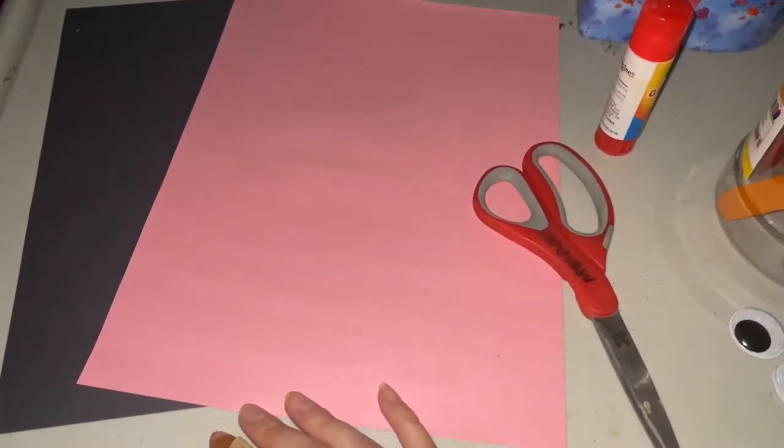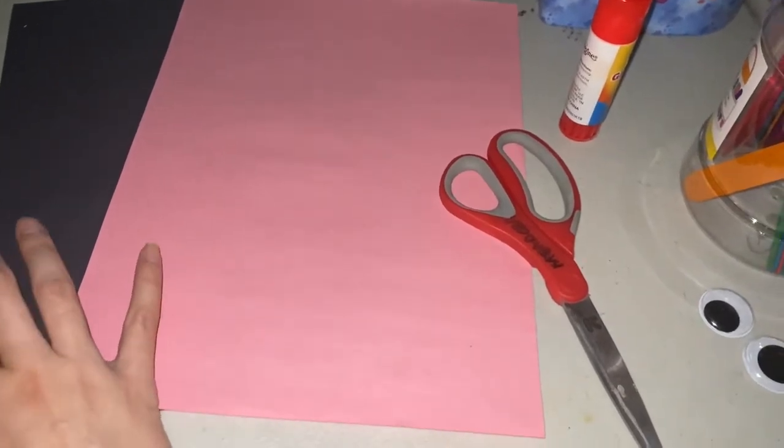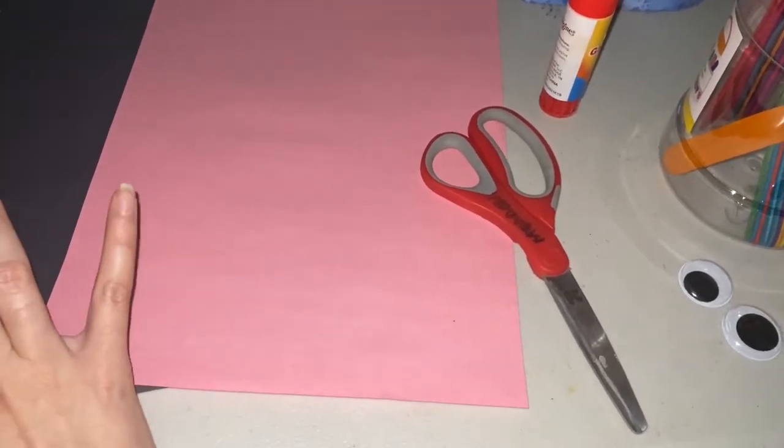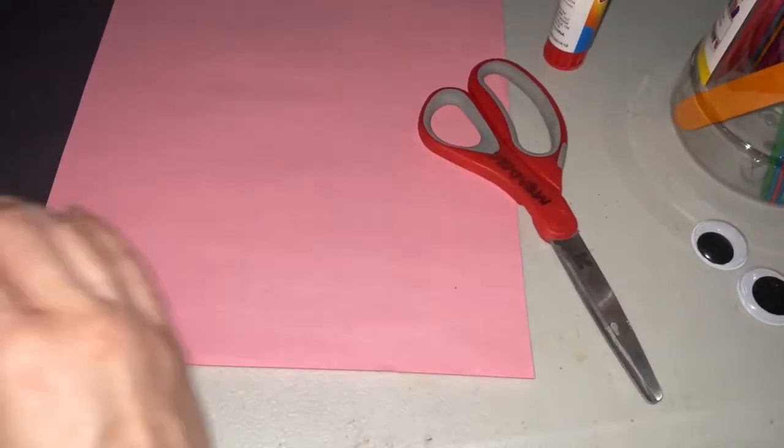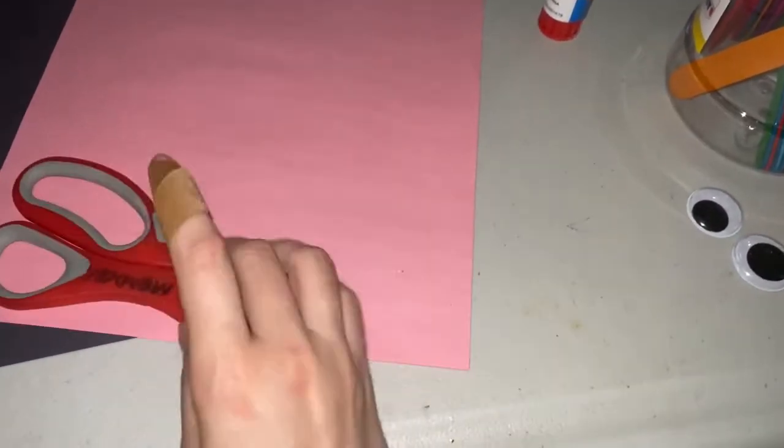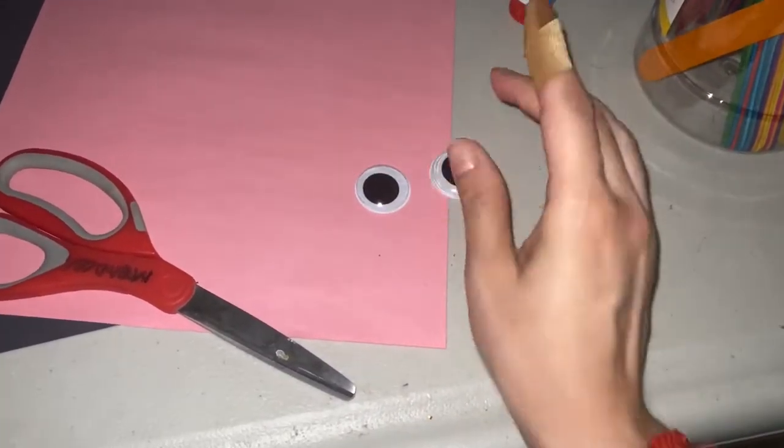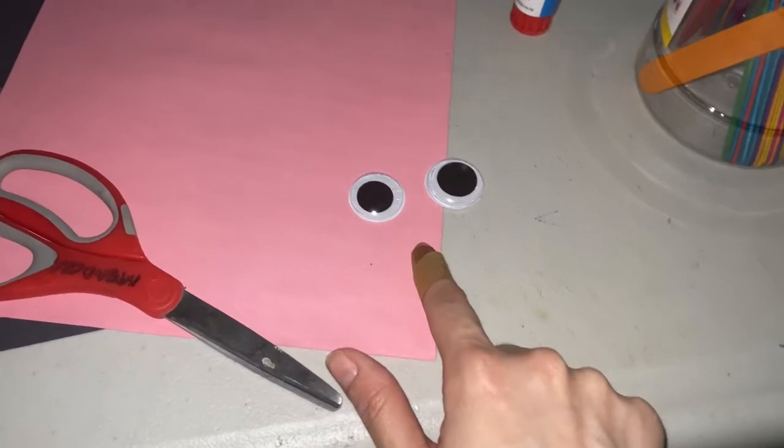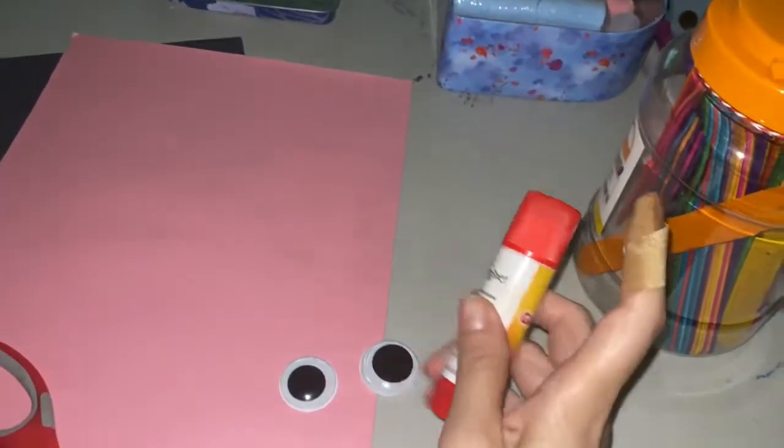Chalk birds - we're gonna need black construction paper or black paper. If you don't have construction paper, you guys can use a brown paper bag, some scissors to cut the beak, some wiggly eyes, some chalk, and a glue stick.